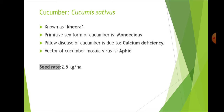The next important crop is cucumber, Cucumis sativus, originated in India. Chromosome number is 14, also known as Kheera. The primitive sex form of cucumber is monoecious, meaning both male and female flowers are present on different flowers but on the same plant.